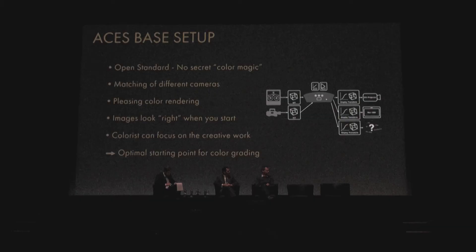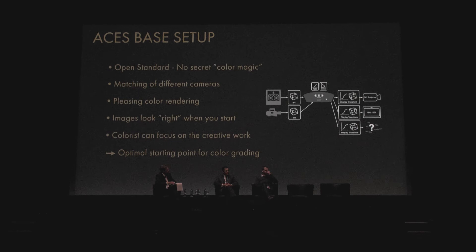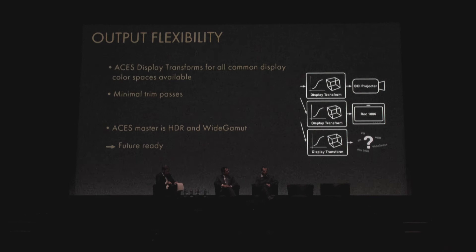With this tone mapping happening on the output side, when I open a project using the ACES system, the images look right when I start. They look roughly like they looked on set, and you don't have a washed-out or desaturated image where you first have to apply all your curves to get things looking right before working on the creative look. From my point of view, it's a really optimal starting point for color grading.